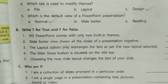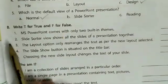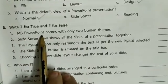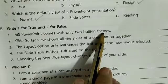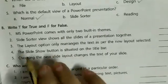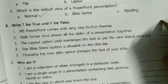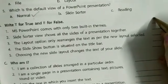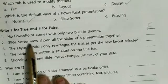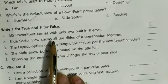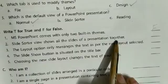After this we will do true or false. Write T for true and F for false. First one: MS PowerPoint comes with only two built-in themes. This is incorrect — MS PowerPoint comes with various themes, so write F for false.